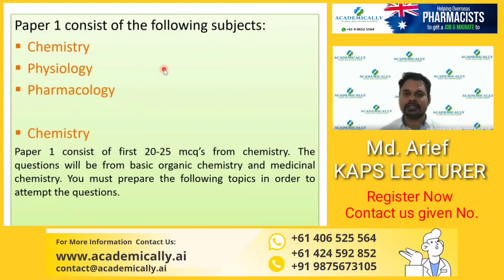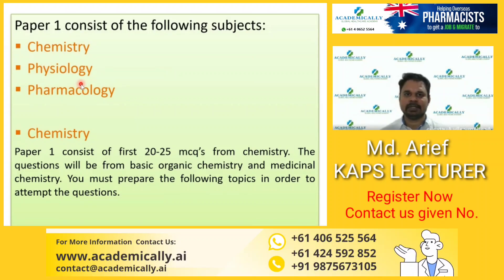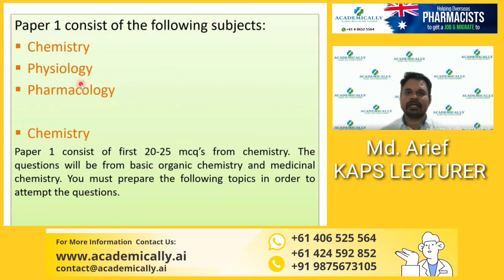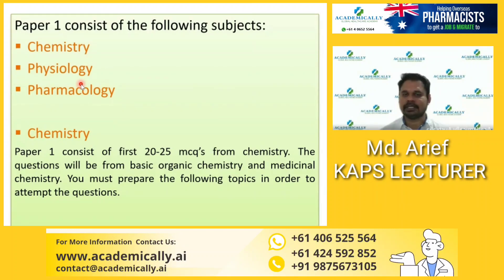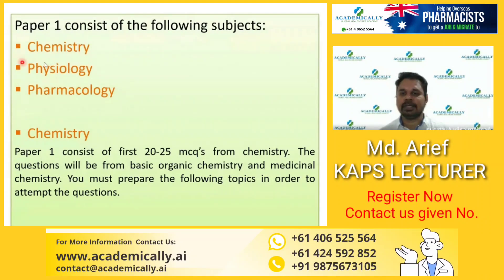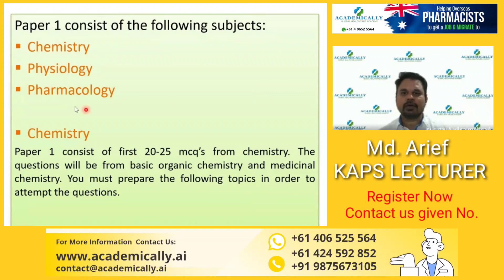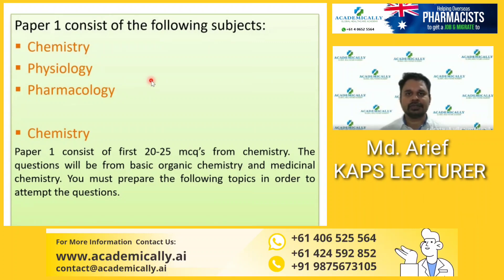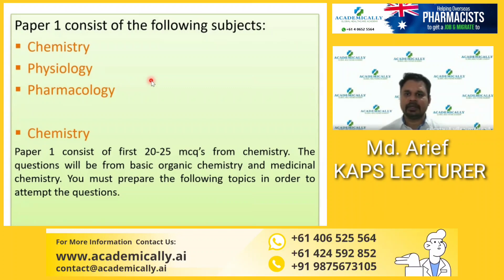The second condition is you need to get 50 percent from the chemistry part and 50 percent from the pharmacology and physiology part. So if you get 30 MCQs from chemistry in the CAPS exam, you need to get 15 correct. In physiology and pharmacology you will get around 70 MCQs and you need to score 35, with an overall score of 50.